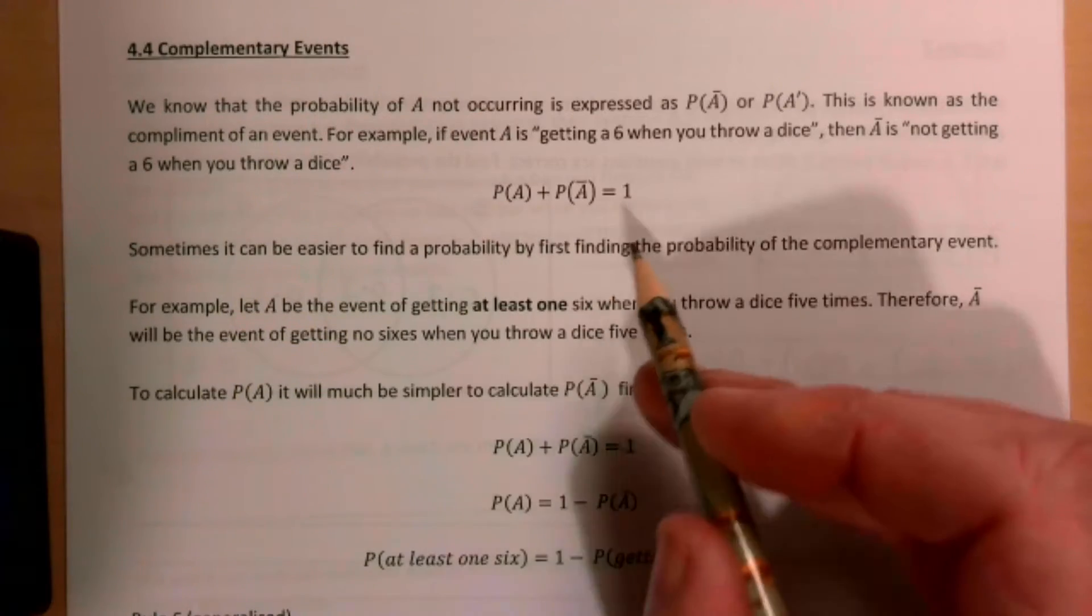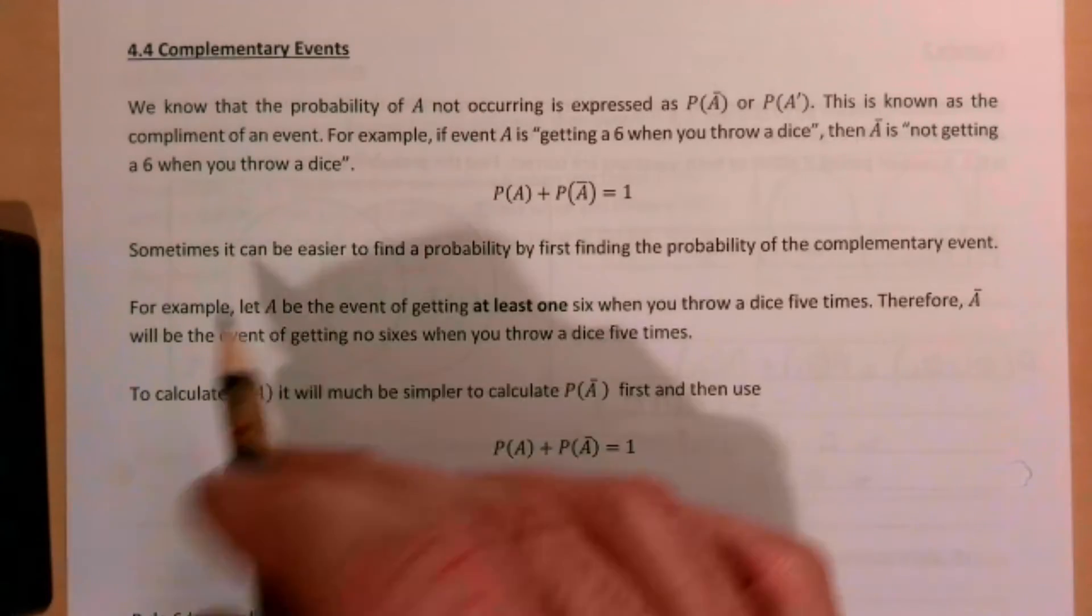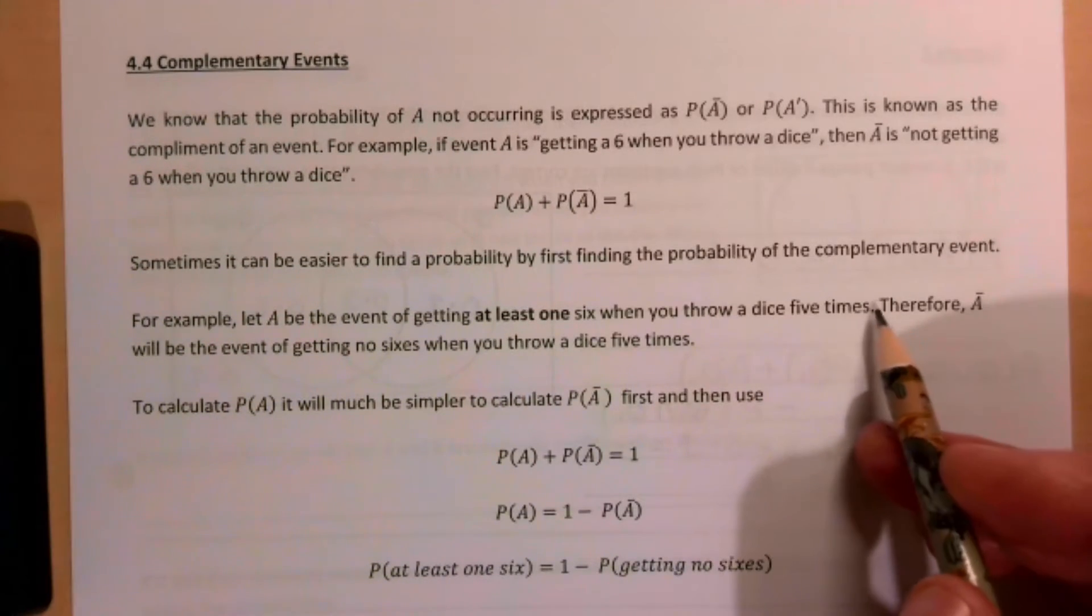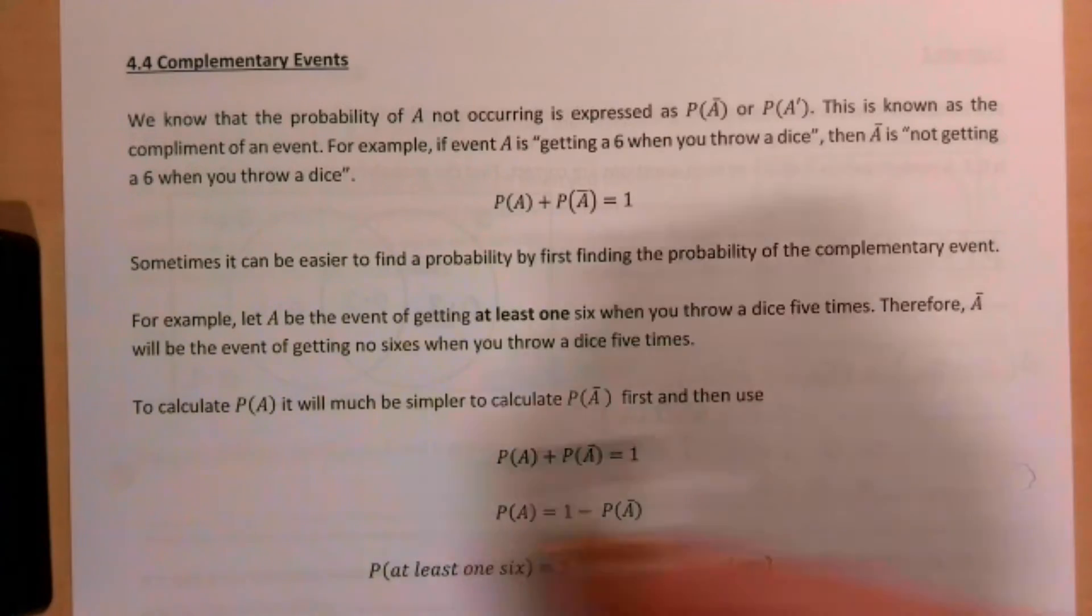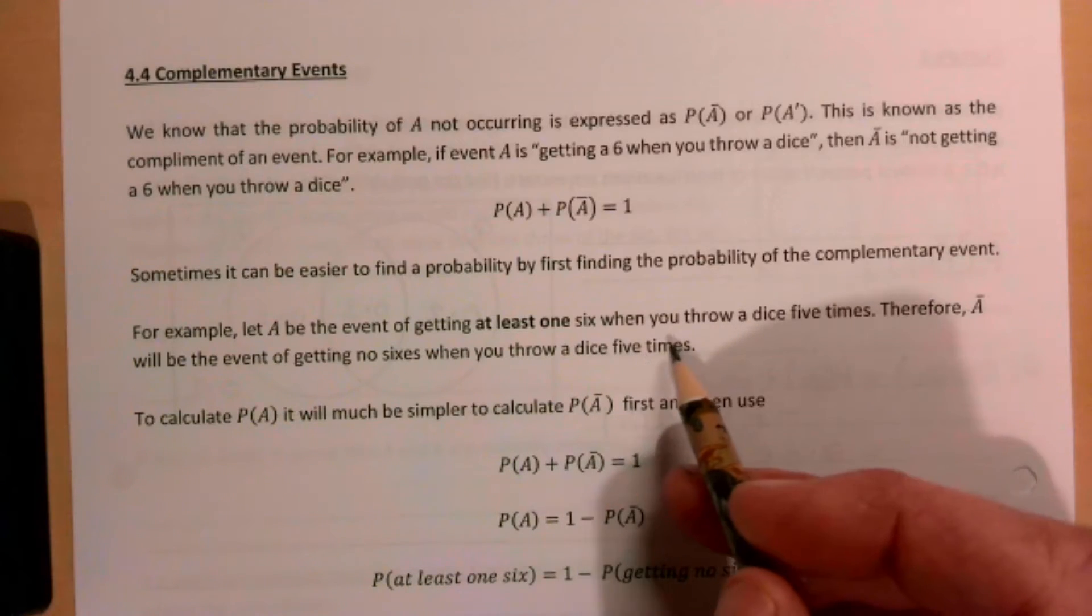Sometimes it can be easier to find the probability by first finding the probability of the complementary event. For example, let A be the event of getting at least one 6 when you throw a dice five times. Therefore, the probability of not A will be the event of getting no sixes when you throw a dice five times.